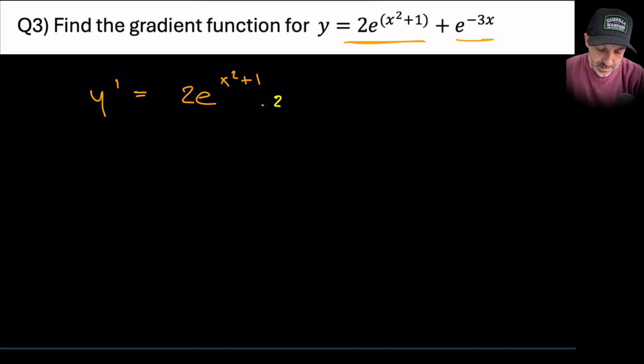So the derivative of the power would be 2x. The constant disappears when you're differentiating. And then I'm going to keep the plus here, but then e^(-3x) times by the derivative of the power, and the derivative of the power would be -3.